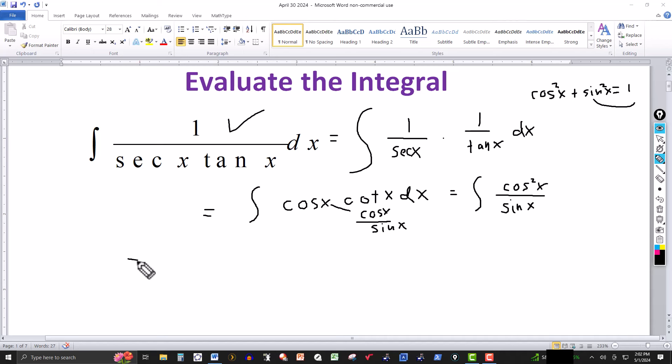I'll come back over here then and say this is equal to the integral of... I'm going to replace the cosine squared of x by 1 minus sine squared of x, and that's over sine of x. This is dx here.